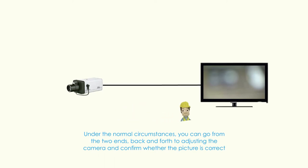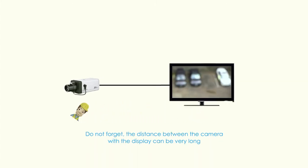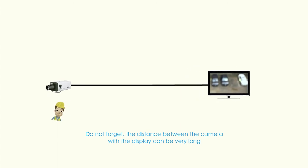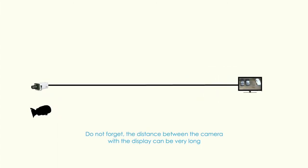Under normal circumstances, you can go from the two ends back and forth to adjusting the camera and confirm whether the picture is correct. Don't forget, the distance between the camera and the display can be very long.